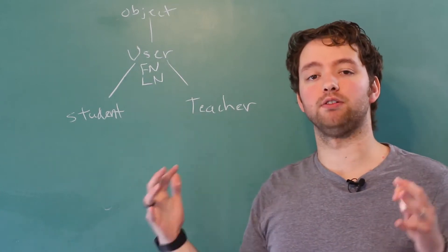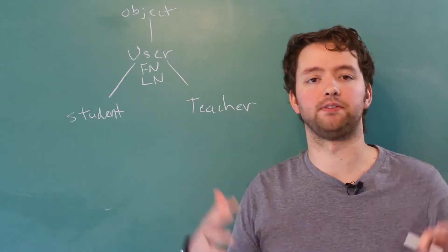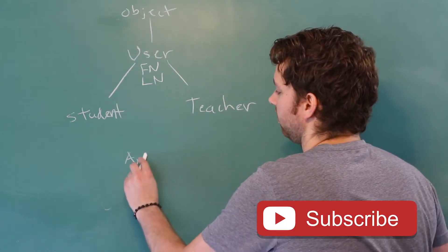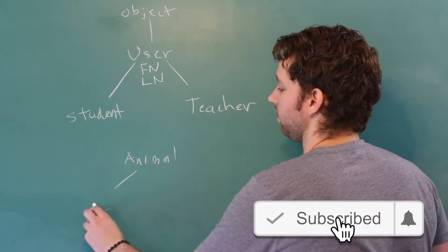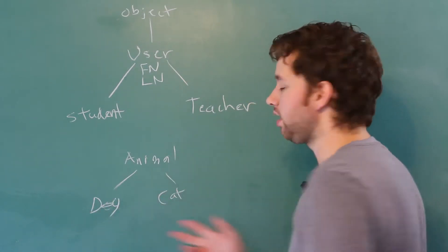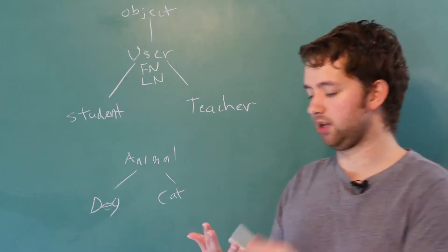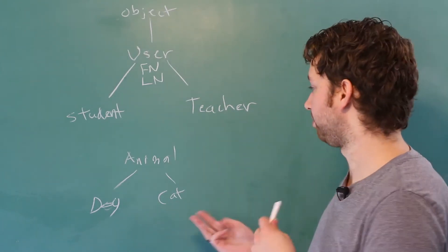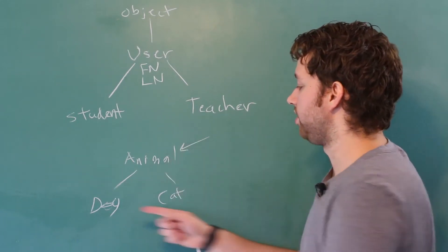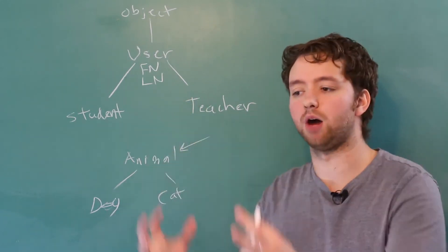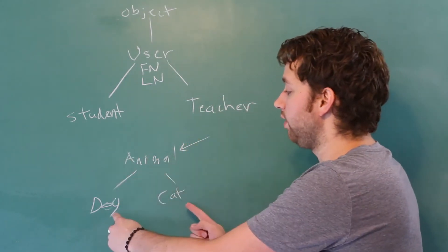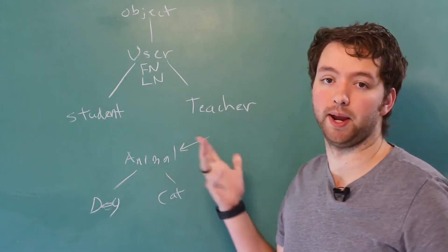Another example you might hear is animal, and then a dog and a cat. A dog and a cat have a lot in common — they both walk, they both eat, they both poop. So we can define those behaviors inside of animal and then just inherit those. That way we don't have to copy the same code and put it in two different places — we just put it in one place and have it inherited by inheriting from animal.